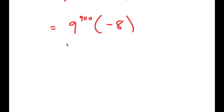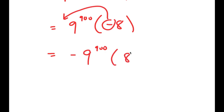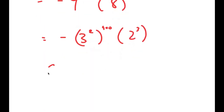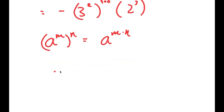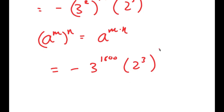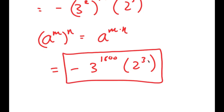From here I said I was going to simplify as much as possible. We can't get the exact value because 9 to the power of 900 is such a big number, but we can get the simplified form. I move the negative sign to the front to get negative 9 to the power of 900 times 8, which becomes negative 3 squared to the power of 900 times 2 to the power of 3. Using the property a to the power of m to the power of n equals a to the power of m times n, I get negative 3 to the power of 1800 times 2 to the power of 3 as my final solution.